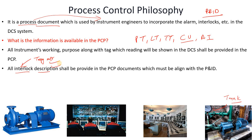When preparing the process control philosophy, keep in mind that it must be aligned with the latest P&ID. For example, if the P&ID is at revision 4, you must prepare the control philosophy with respect to revision 4.